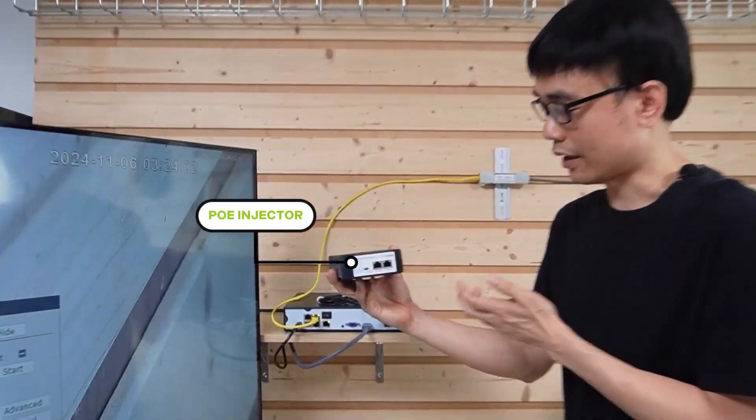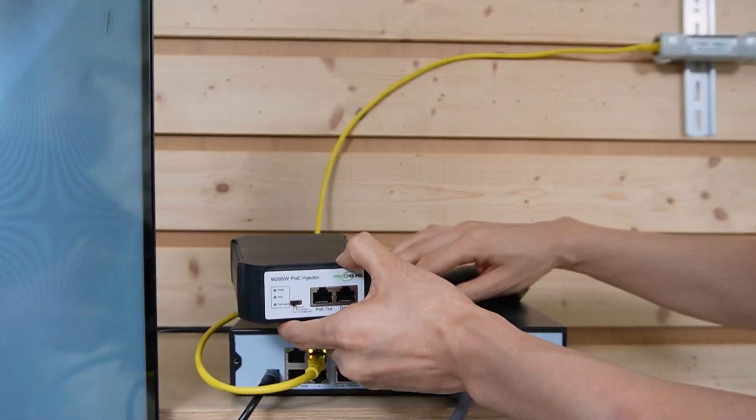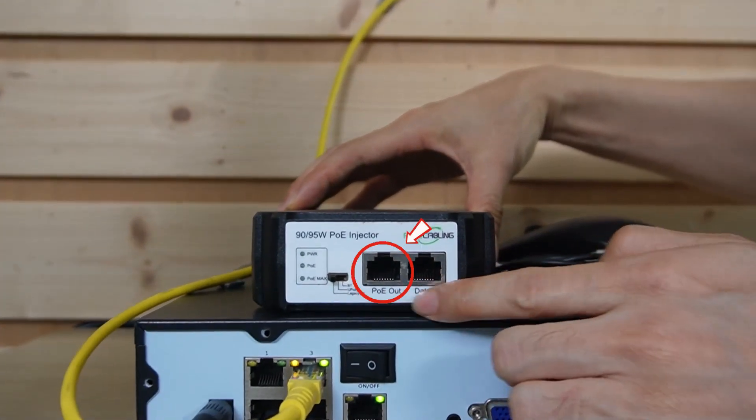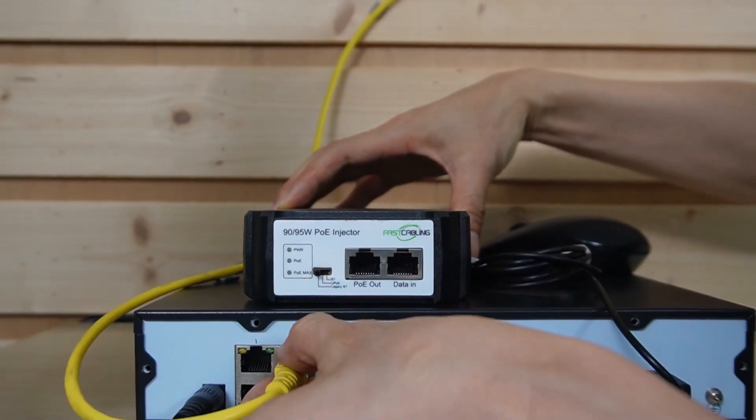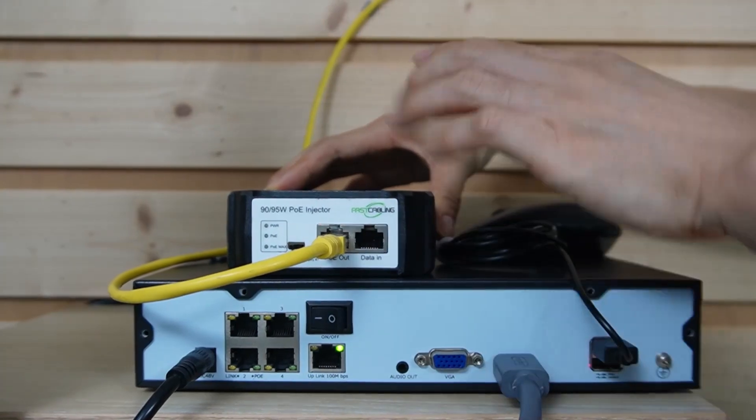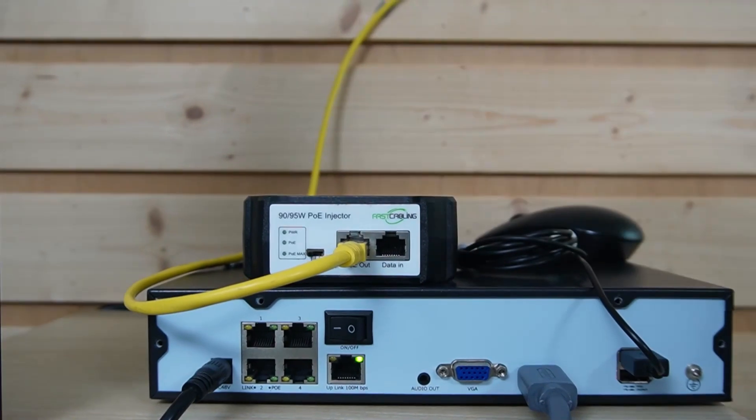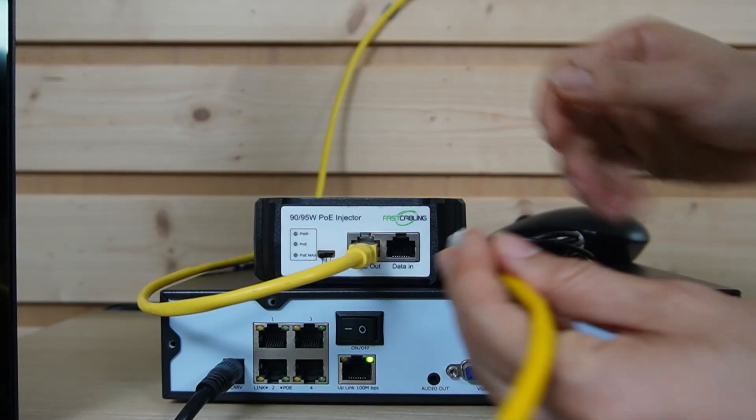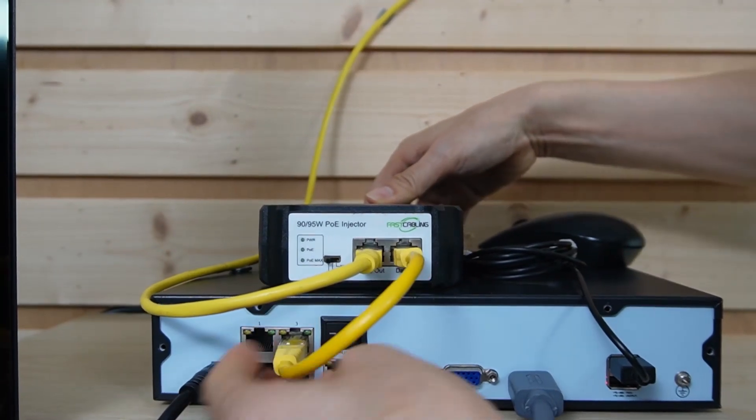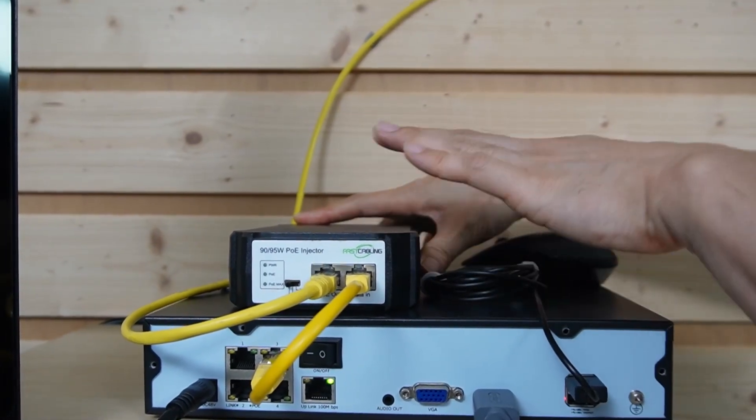This is the PoE injector, 90W. It can output 90W through the single Ethernet port. Now, let's replace the power solution by using this PoE injector. There are two ports. One is the PoE out, one is the data in. The cable going to the camera connects to the PoE out, and use this PoE injector to provide the power for the PTZ camera. Then, I use a short patch cord to link the data in to one of the PoE ports on this PoE NVR. This port only provides the data exchange, and this PoE injector will provide the power to the camera.